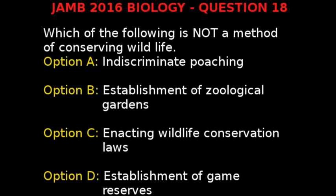Option B, establishment of zoological gardens. Option C, enacting wildlife conservation laws. Option D, establishment of game reserves. Our correct answer is indiscriminate poaching.